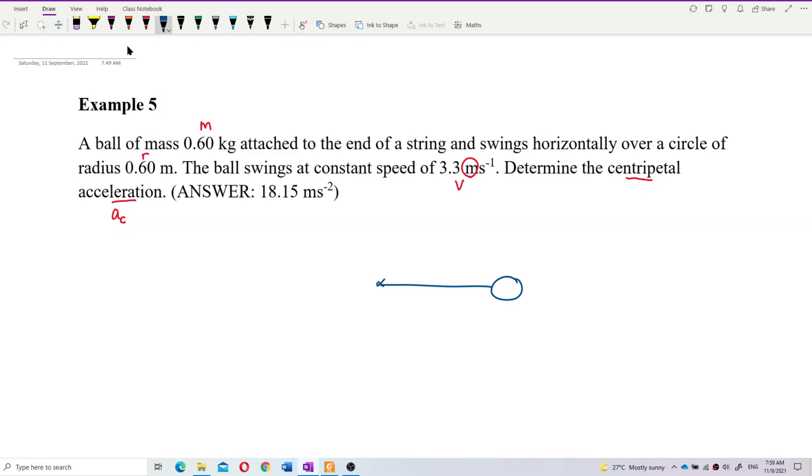And then it swings horizontally. So the radius of the circle - this is the radius. And it has a mass.